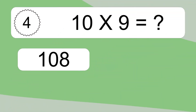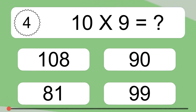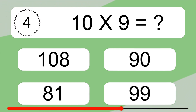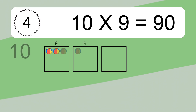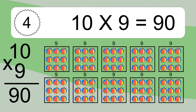10 times 9 equals what? 10 times 9 equals 90. We have 10 boxes, and each box has 9 colorful balls inside. If you count all the balls in all the boxes together, you will have 10 times 9 balls. This equals 90 balls.